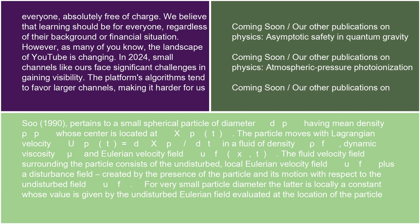The fluid velocity field surrounding the particle consists of the undisturbed local Eulerian velocity field uf plus a disturbance field, created by the presence of the particle and its motion with respect to the undisturbed field uf. For very small particle diameter, the latter is locally a constant whose value is given by the undisturbed Eulerian field evaluated at the location of the particle.